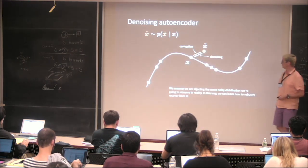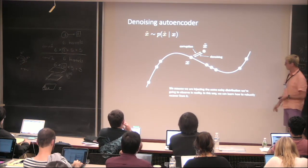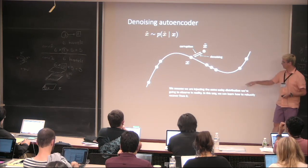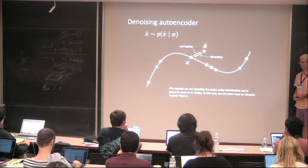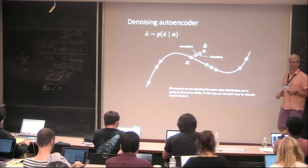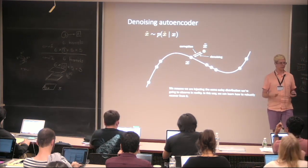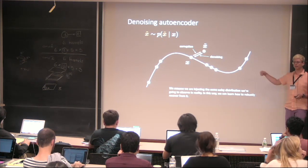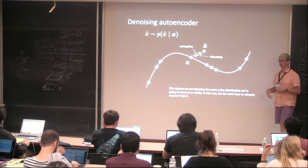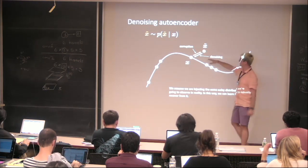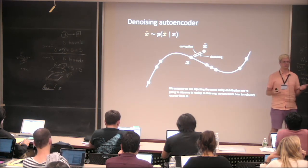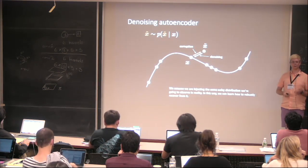The denoising autoencoder gets things that are outside the manifold and brings them back. We assume the noise distribution we inject during training matches what we'll observe later in reality. By learning to remove a specific noise distribution, we make the model robust to that kind of corruption. We learn the perturbation and then learn how to reverse it.